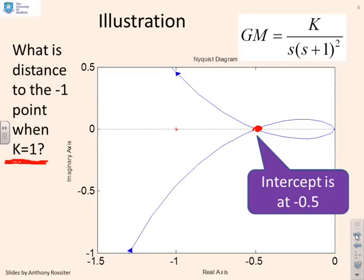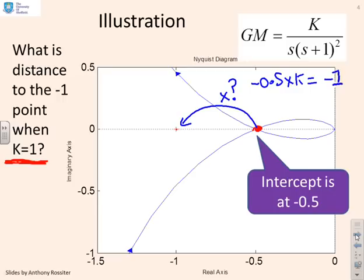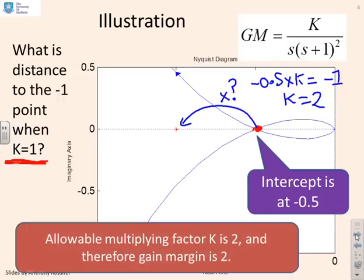The particular system is 1 over s(s+1)², with K chosen to be 1. This system intercepts the negative real axis at minus 0.5. The gain margin is defined as how much we can change the multiplying factor K to go through minus one. So: minus 0.5 times K equals minus one gives K equals 2. Therefore the gain margin for this system is 2. If I multiply by a number bigger than 2, I will end up closed loop unstable.